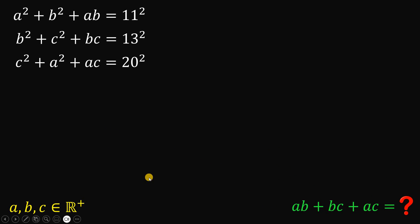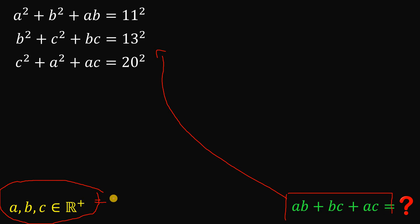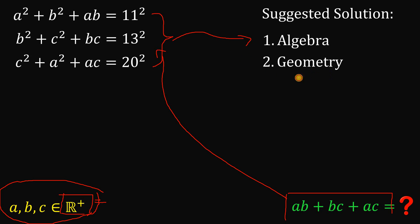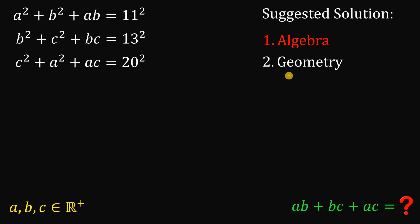Our goal here is to solve for the value of AB plus BC plus AC, given these three equations, wherein A, B, and C are all positive real numbers. I have two suggested solutions. One suggested solution is using algebra, of course, since this involves a lot of variables and numbers. My second suggested solution — and this is my favorite — is to convert this to geometry. Using algebra takes a lot of time for this kind of question, so instead I will show you the solution using geometry.